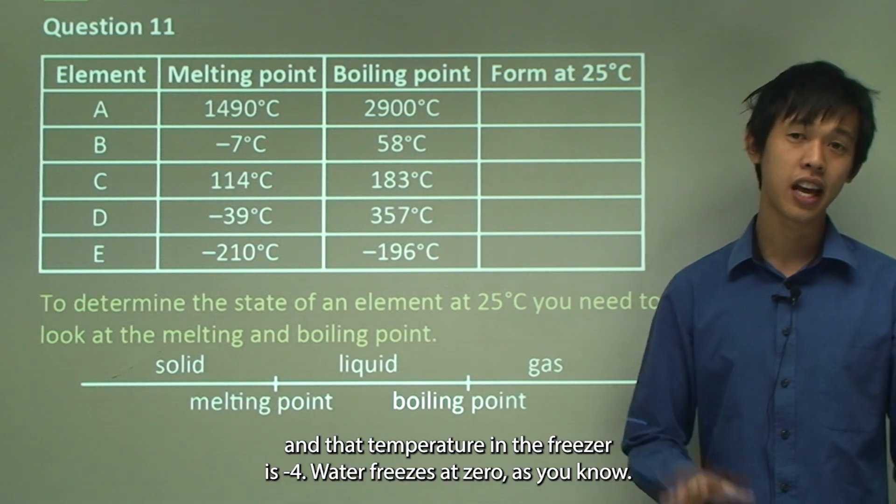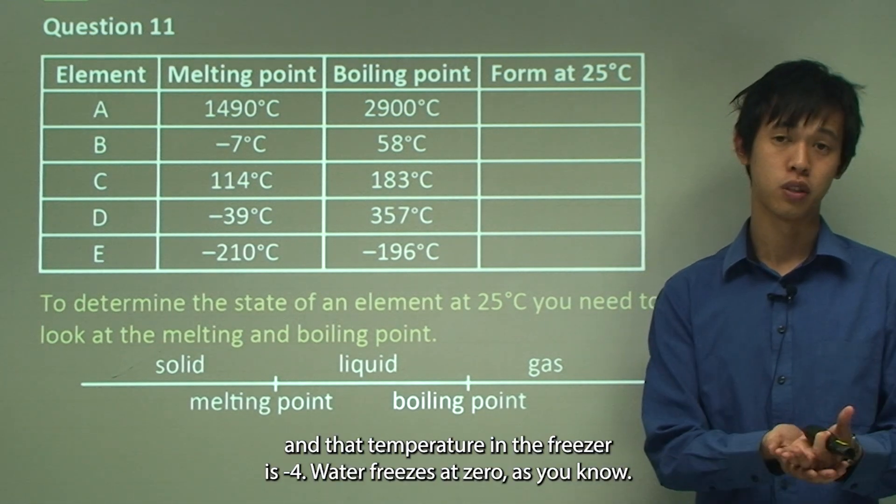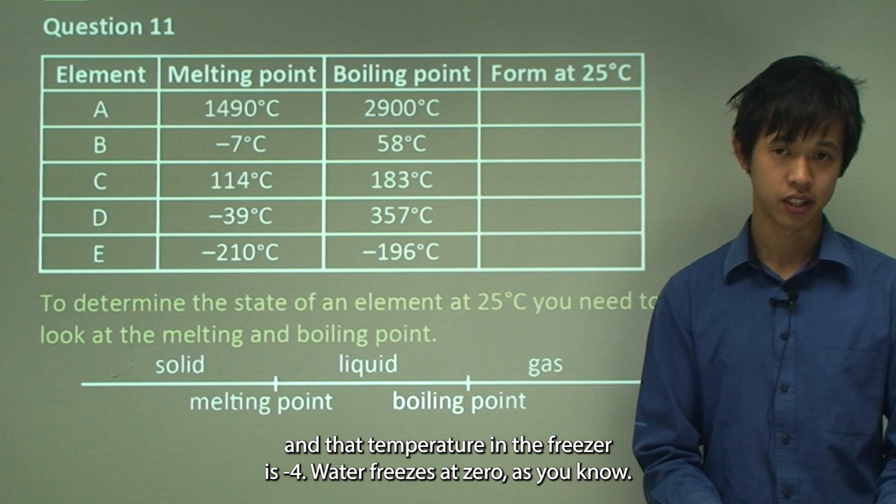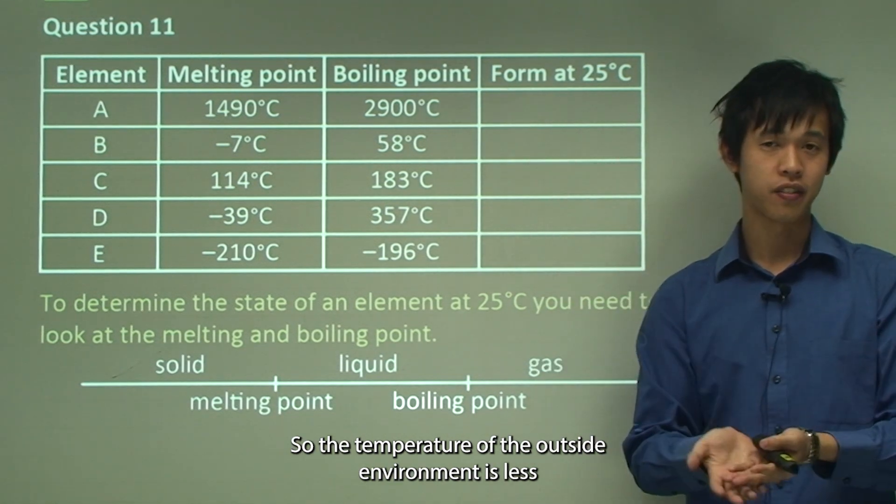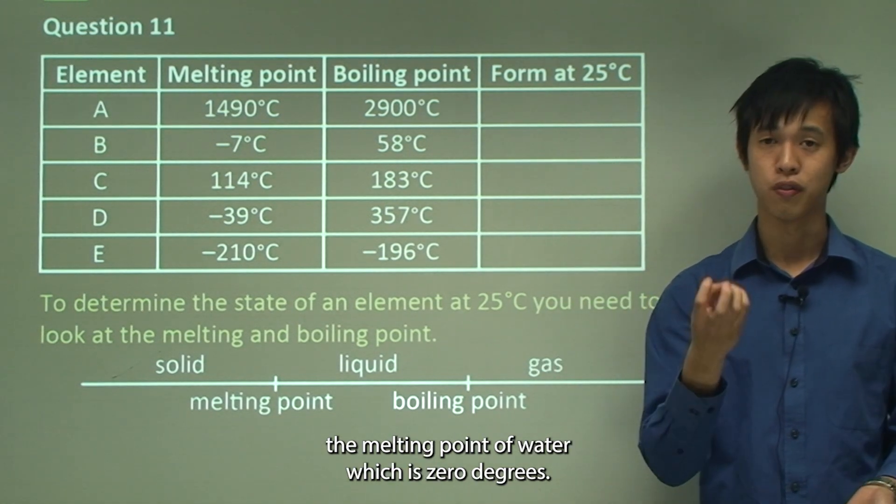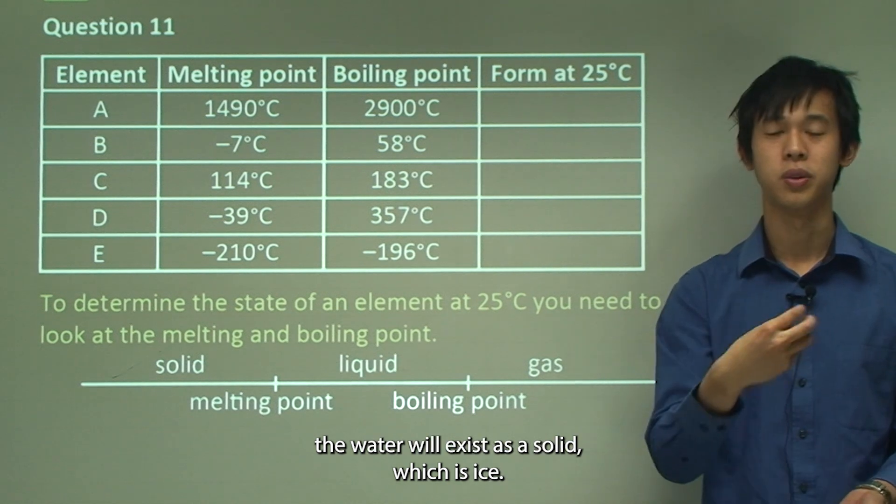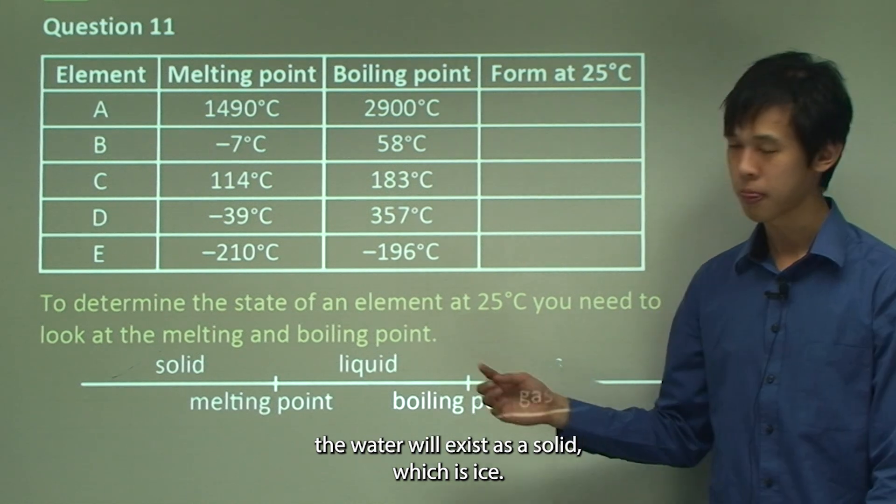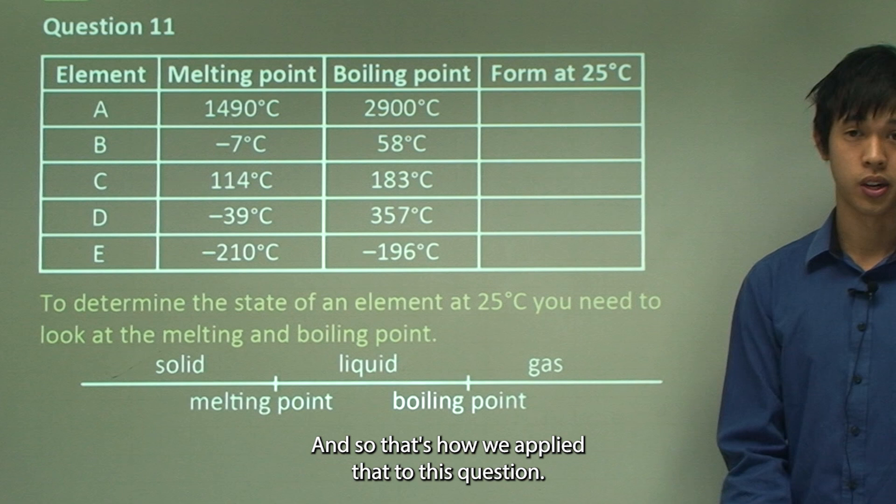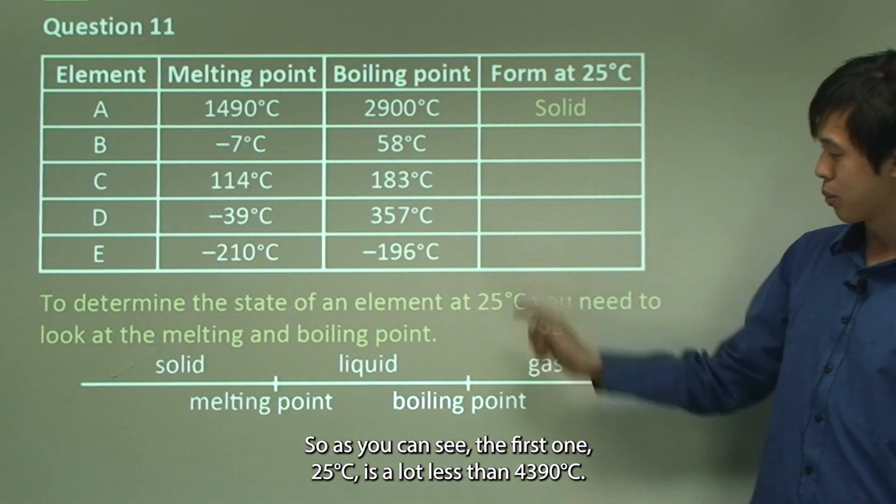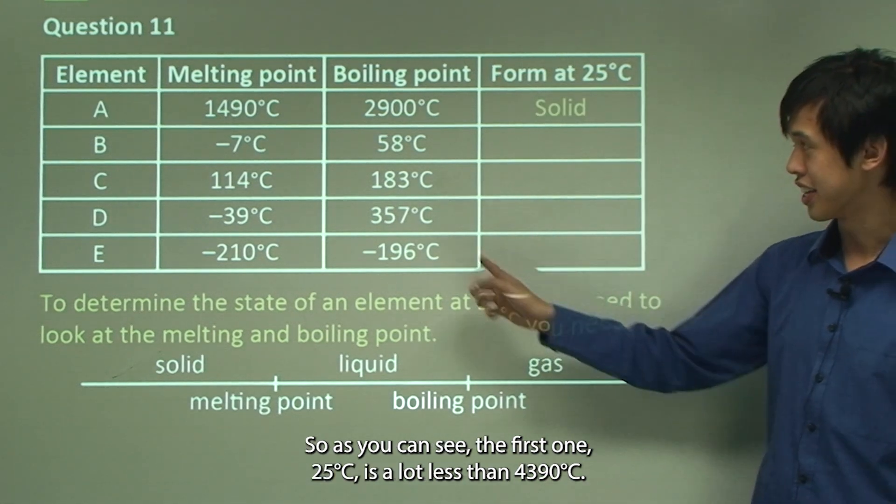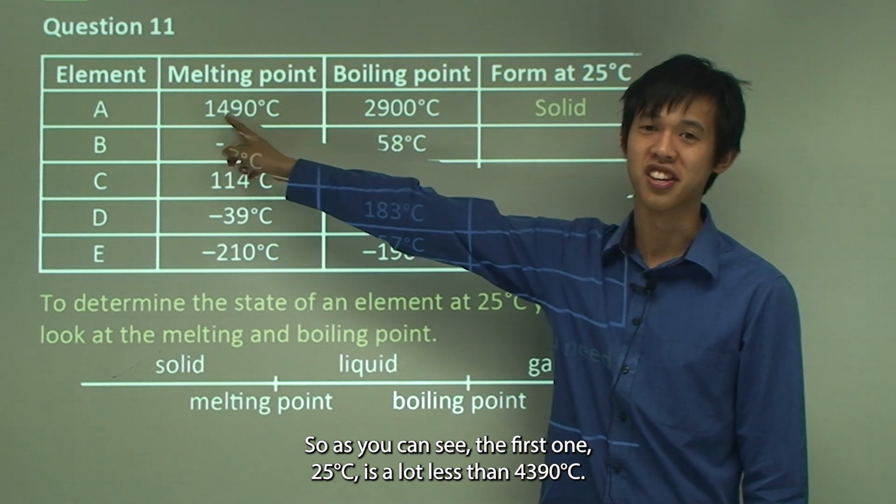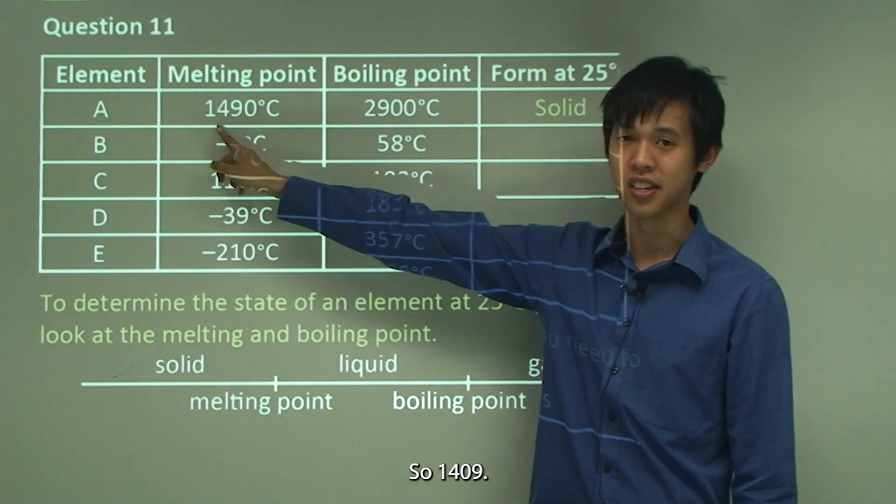In your freezer, your freezer will get down to negative four degrees Celsius. That temperature in the freezer is negative four, water freezes at zero as you know, so the temperature of the outside environment is less than the melting point of water which is zero degrees, the water will exist as a solid which is ice. That's how we apply that to this question. As you can see the first one, 25 degrees Celsius is a lot less than 1490 degrees Celsius, so it's much less than the melting point so you would expect that element A is a solid.